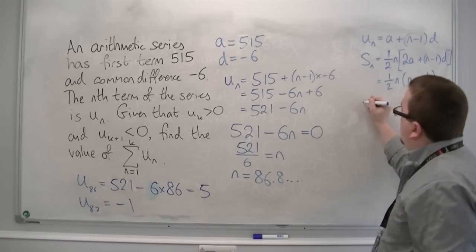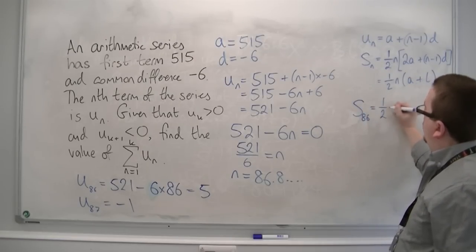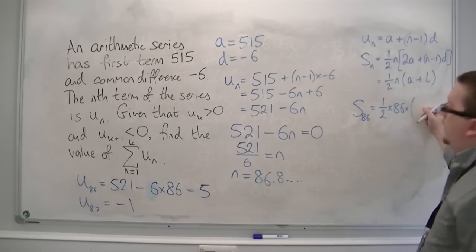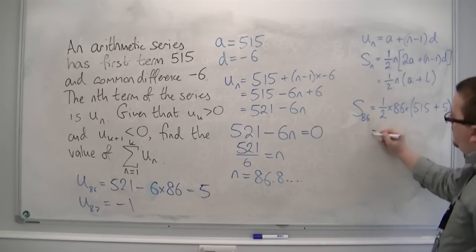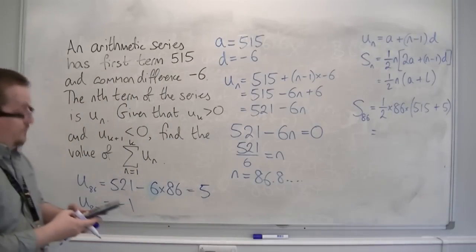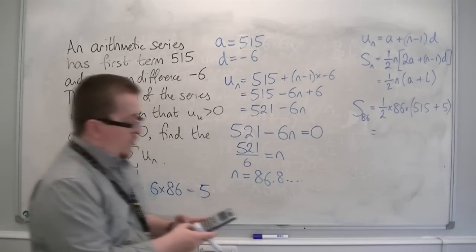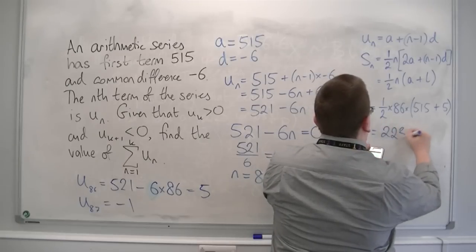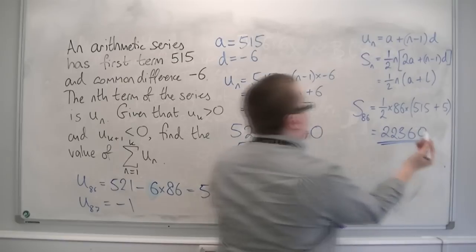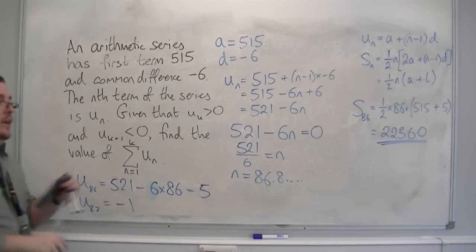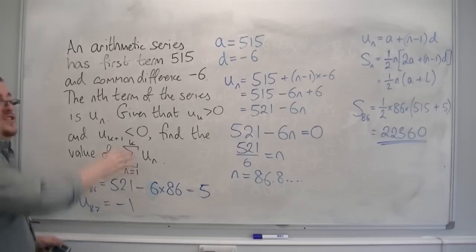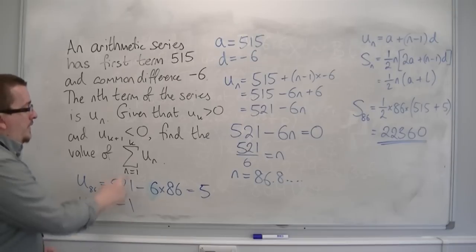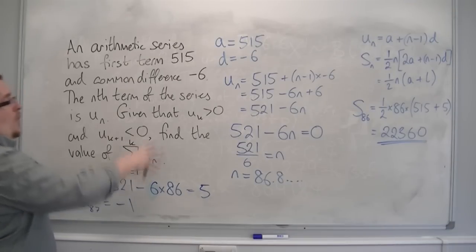So, the sum of the first 86 terms is (1/2)×86×(515 + 5). So, I throw that into my calculator, times by 520, and I get 22,360. So, this is the sum of the first 86 terms—all of the positive terms. And by the time you get to the next term, you start subtracting because they go into negative values. So that's how we can solve this problem. This is what I wanted: the sum from 1 to 86 of my nth term.